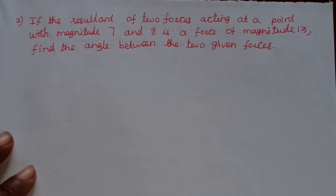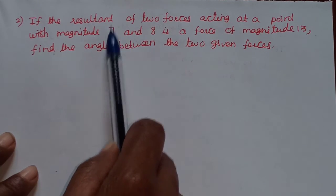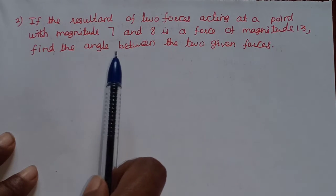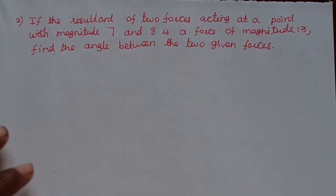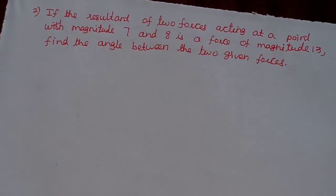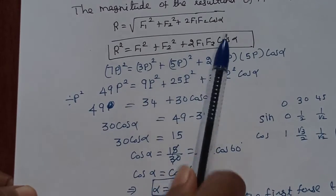Second problem: if the resultant of two forces acting at a point with magnitudes 7 and 8 is a force of magnitude 13, find the angle between the two forces. Let alpha be the angle between the two forces and use the formula: resultant squared equals F1 squared plus F2 squared plus 2 F1 F2 cos(alpha).